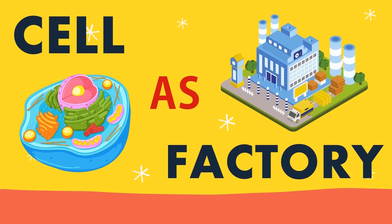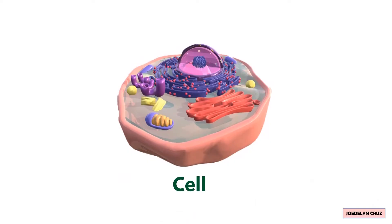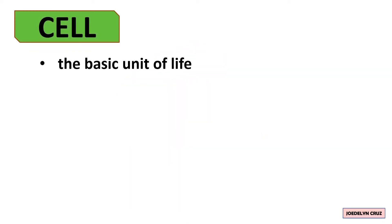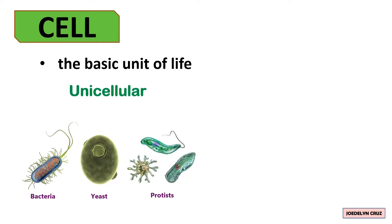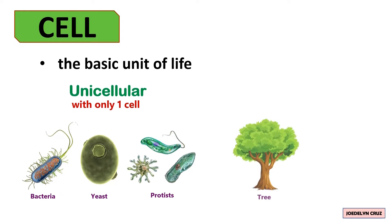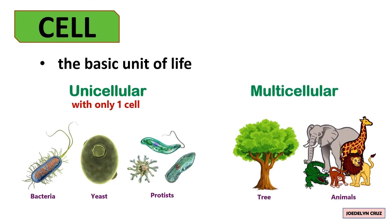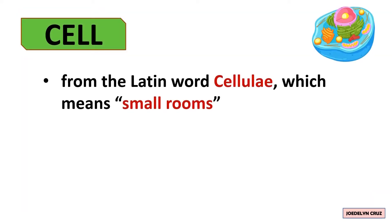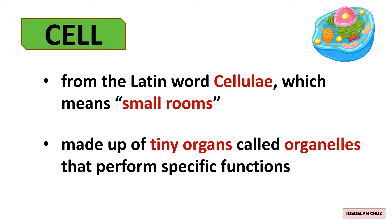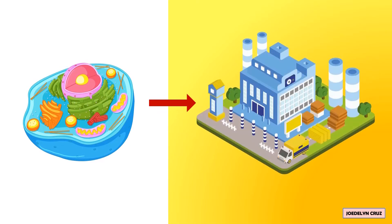Cell as Factory Analogy. The cell is the basic unit of life. Some organisms like bacteria, yeast, and protease are unicellular, consisting of only one cell, while organisms like trees and animals are multicellular, made up of many cells. The word 'cell' comes from the Latin word cellulae, meaning 'small rooms.' A cell is made up of tiny organs called organelles that perform specific functions. You can imagine a cell as a factory with different departments, each performing specialized tasks.